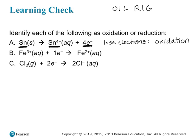In problem B, we start with an iron 3+ ion and add one electron; in the products we end up with iron 2+. When electrons appear in the reactants, the metal is gaining electrons. Gain of electrons is reduction — so this is reduction. You can always reference the OIL RIG acronym if you need to.